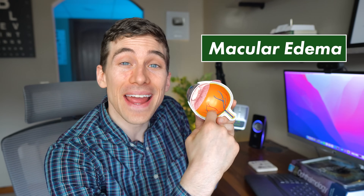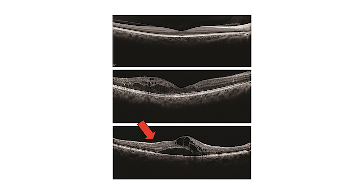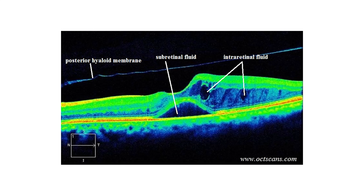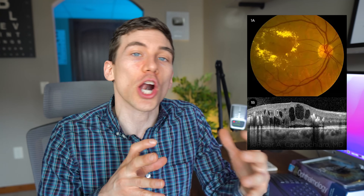Blurred vision and even loss of eyesight can come from diabetes mainly because of what's called macular edema — that's where the retina in the back of the eye begins to swell like a blister filled with clear fluid. Diabetes can cause weakened blood vessels to leak fluid into the retina, creating this blister-like effect that damages the architecture of the retina and makes your vision blurry and out of focus. Macular edema can occur at any stage of diabetes — even before any other retinal signs — and sometimes even without any vision problems, so it's something eye doctors have to be closely watching for.